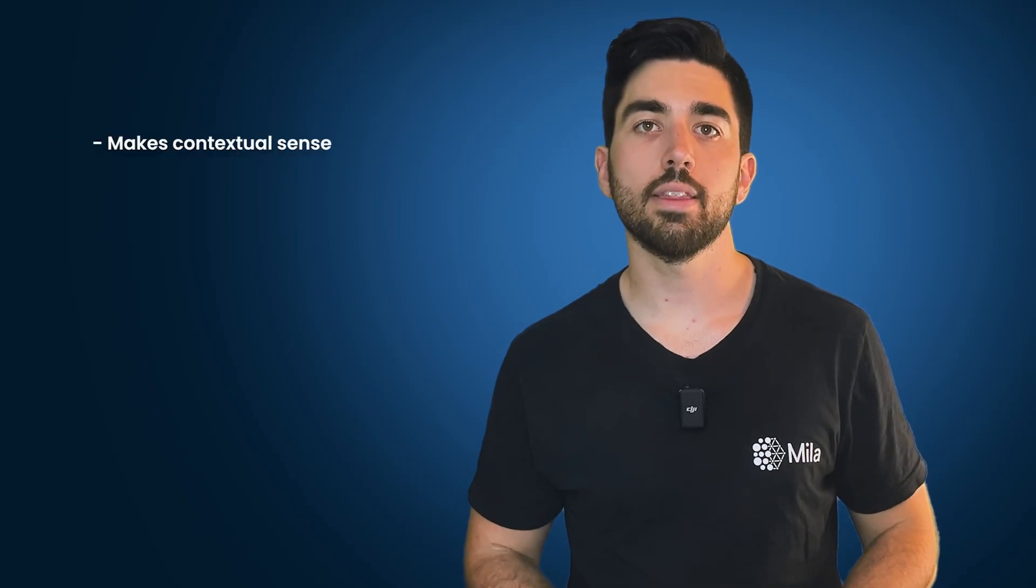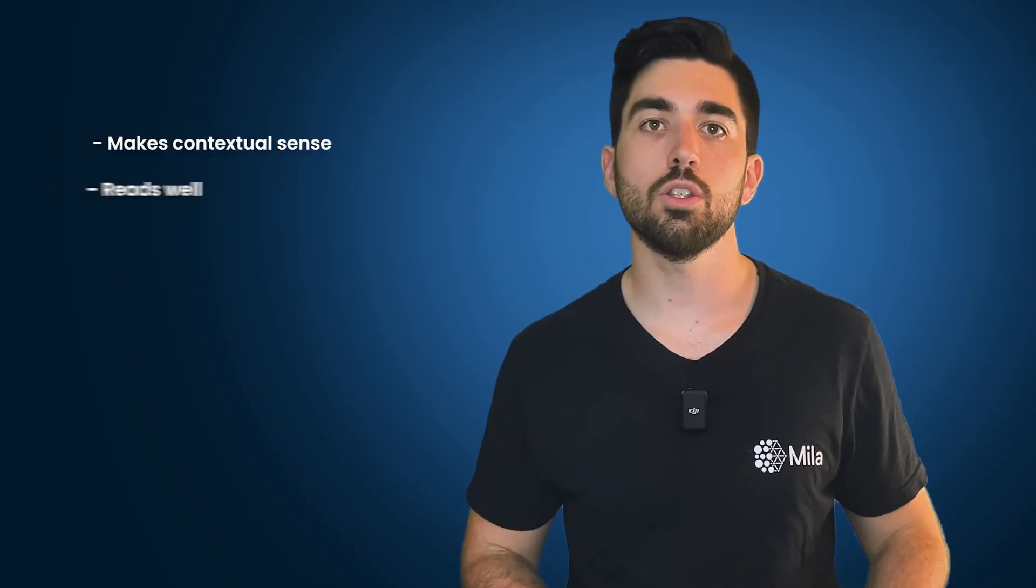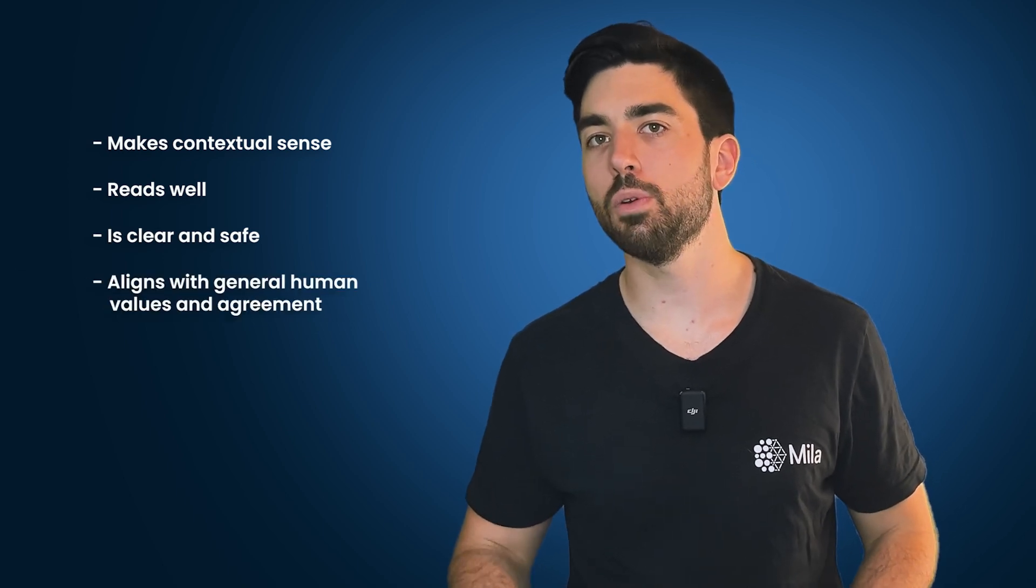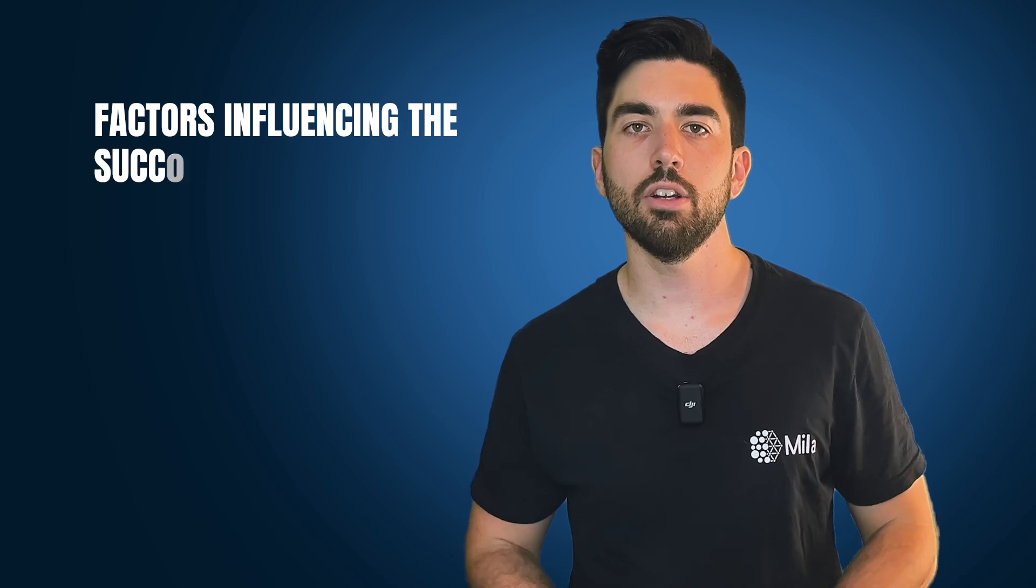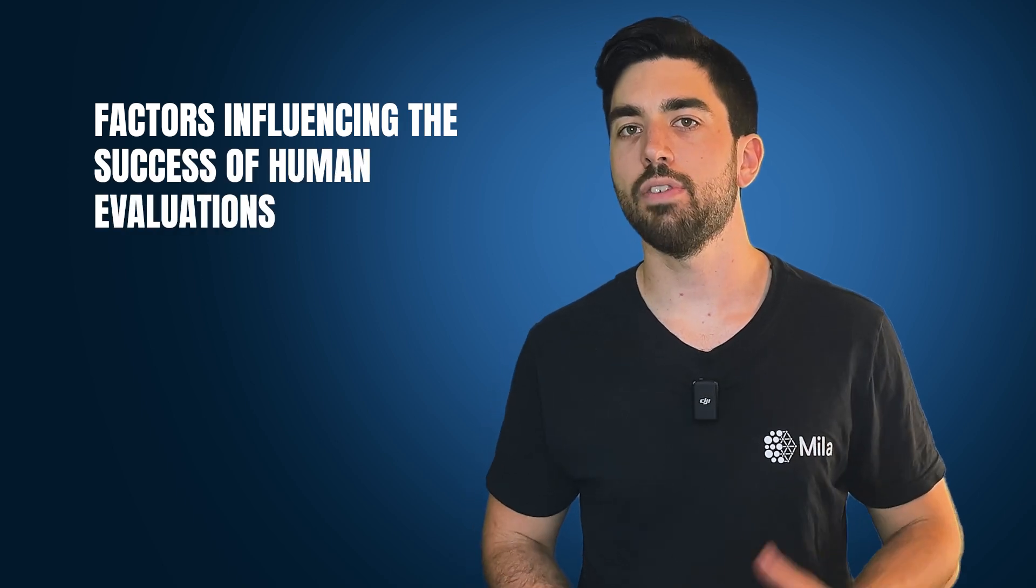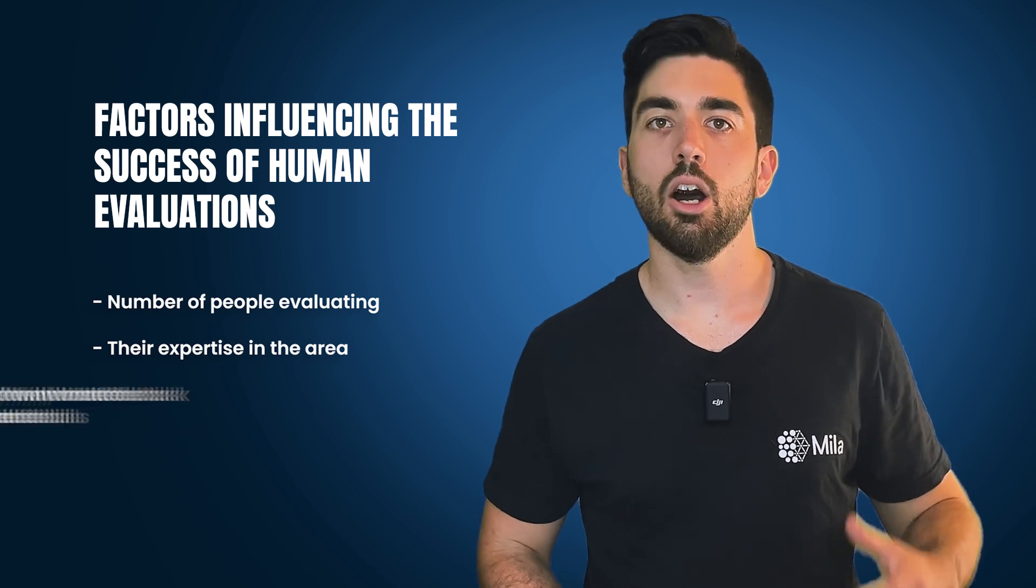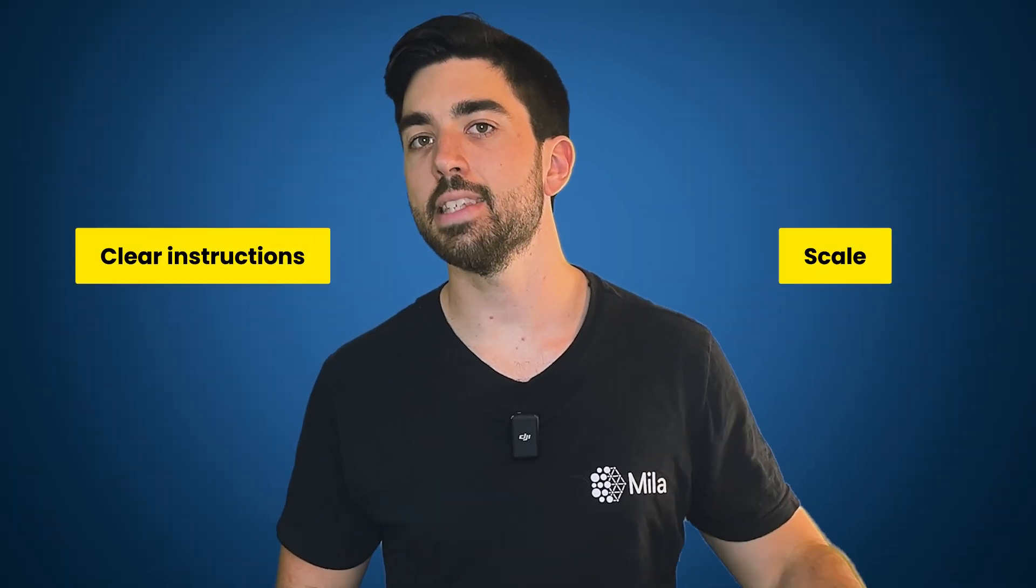Having human evaluators is crucial, because they offer a unique perspective that automatic checks can't match. They don't just look at whether the answer is right. They also consider whether it makes sense in context, reads well, is clear and safe, and seems in line with what humans would generally agree with or value. The success of these human evaluations can depend on several factors, such as the number of people evaluating, their expertise in the area, how well they know the task, and other details. Still, they are susceptible to biases. But so are models. We just cannot avoid that, but we can mitigate it with clear instructions and scale.